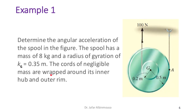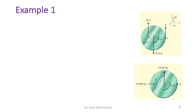The cords of negligible mass are wrapped around the inner hub and the outer rim. The free body diagram and kinetic diagram are shown, with the coordinate system, tension from the cord, and the applied force.